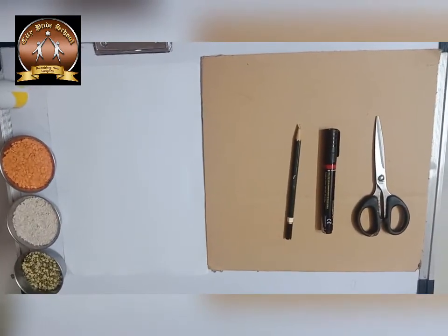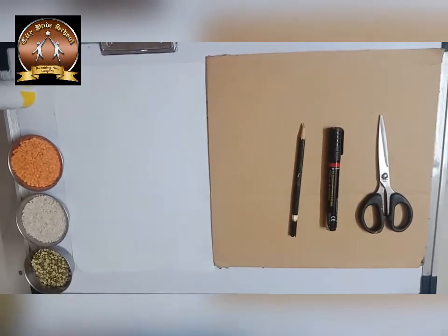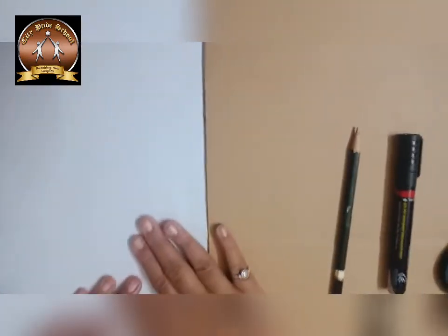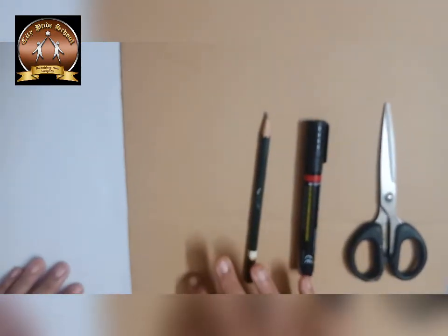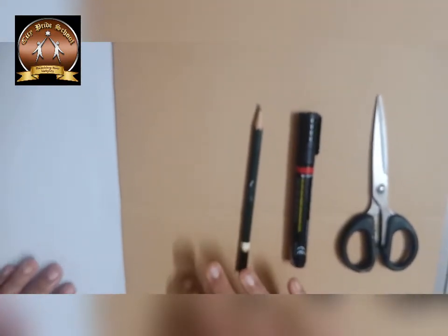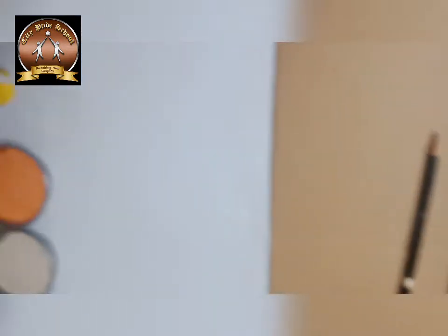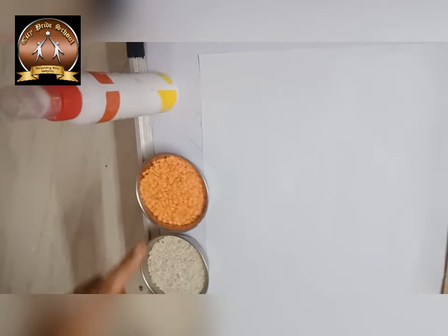Children, today we are going to learn mask making activity. For this activity, we require A4 size drawing sheet, pencil, sketch pen or marker, scissor, one cardboard sheet or any old file, favicol, and some pulses which I mentioned in the notice: masur dal, rice, and green moong. If you don't have these, you can use regular dal and paint it with orange or green water color or poster color afterward.